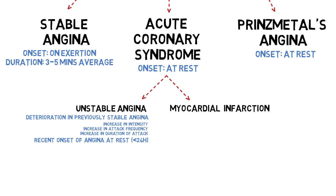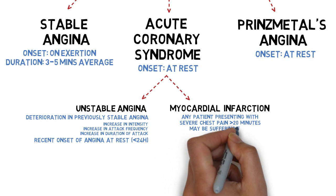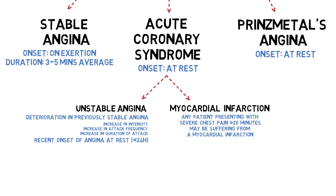For myocardial infarction, any severe chest pain that lasts more than 20 minutes can suggest myocardial infarction. If John Doe had no GTN with him and had to suffer for say 40 minutes, by that time infarction may have already occurred.